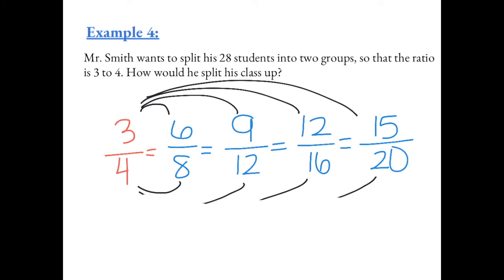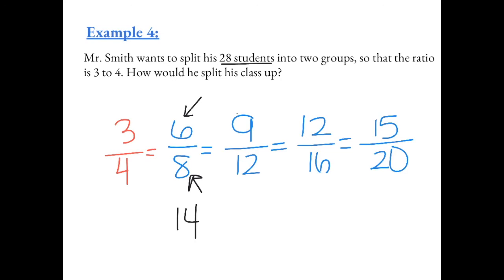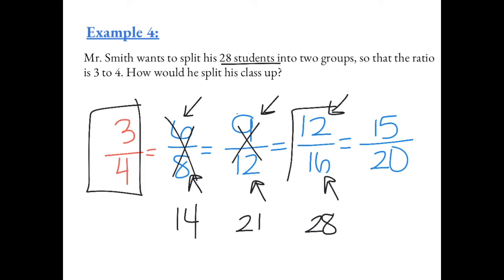So if we split up the students into a group of 6 and 8, that would only equal 14 students in total. And he has 28 students. So that wouldn't work. If we split up the students into a group of 9 and 12, that would be a ratio of 3 to 4, but that would only be 21 students. So that doesn't work. If we split up the students into a group of 12 and a group of 16, that would be 28 students, and this is equal to the ratio of 3 fourths. So this one would work. So he would split his students up into a group of 12 and a group of 16 so that they're a ratio of 3 to 4.